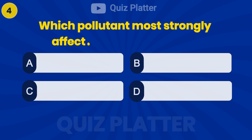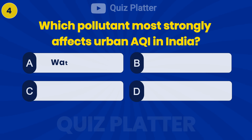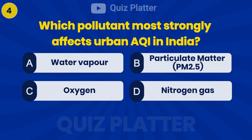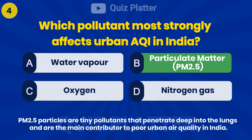Which pollutant most strongly affects urban AQI in India? Answer: B — Particulate Matter.